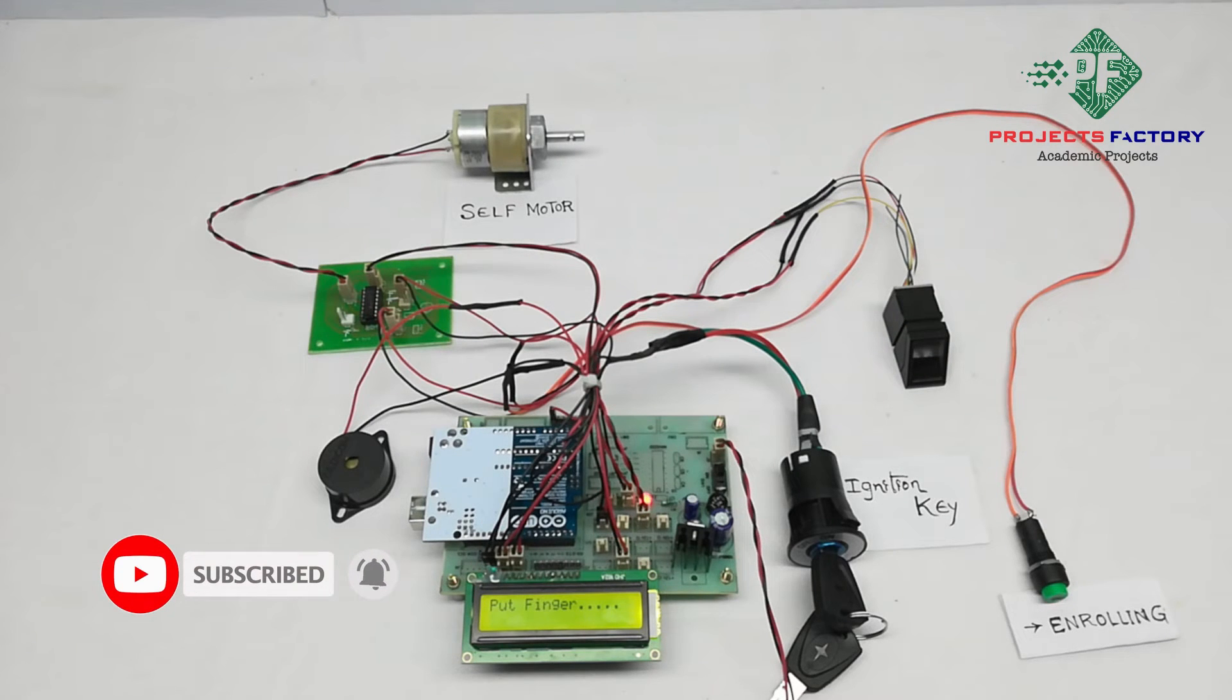Here we will start bike with the authorized fingerprint. Then we have to place finger on module and turn on ignition key. If authorized fingerprint accessed then bike self motor will ON. Actually self motor starts engine then starts rotating.